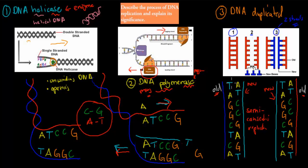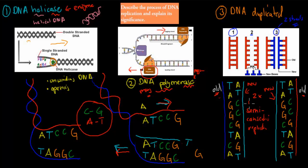So one half of each new strand came from the original DNA, and the other is the copied version — but together they make a complete DNA molecule. We have that happening twice, so overall there are two DNA molecules. That was the replication step.